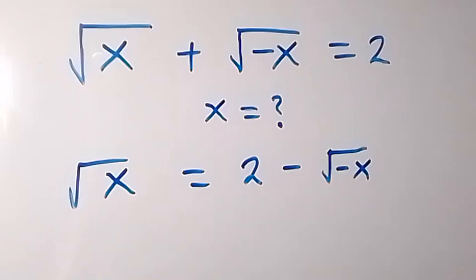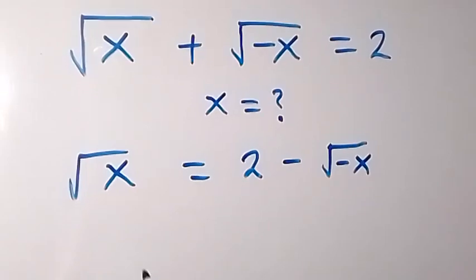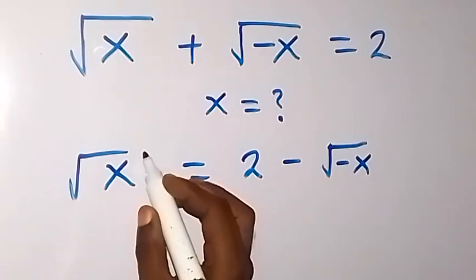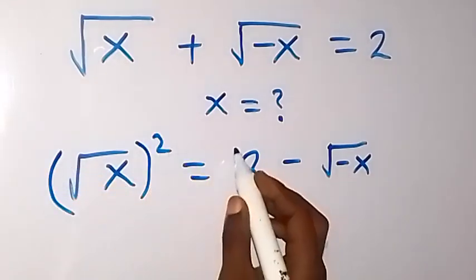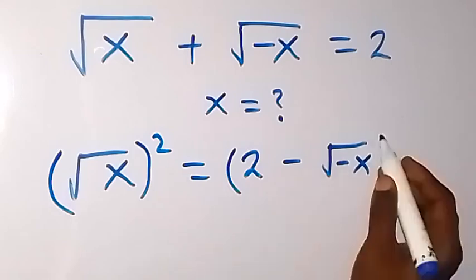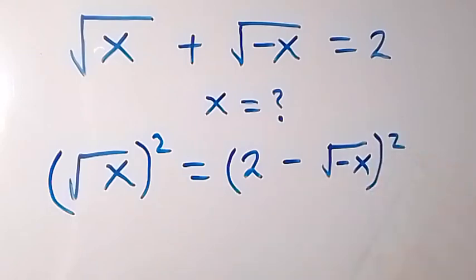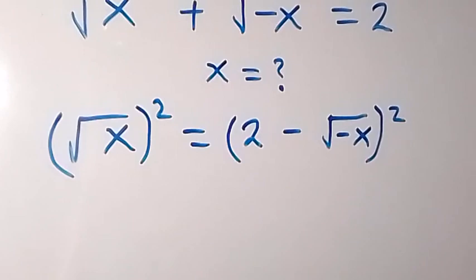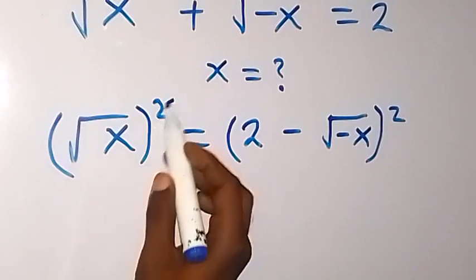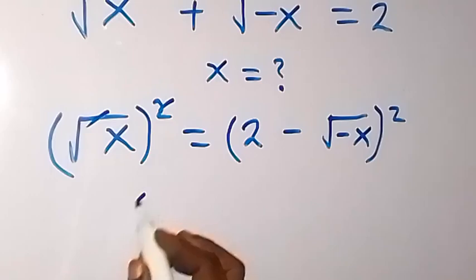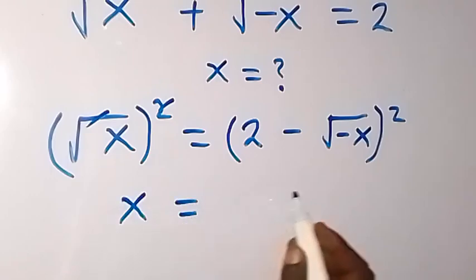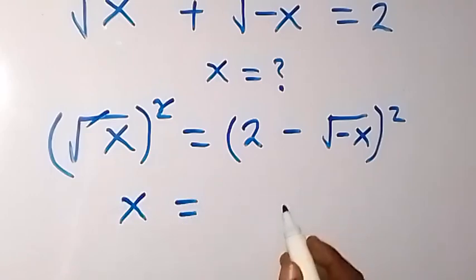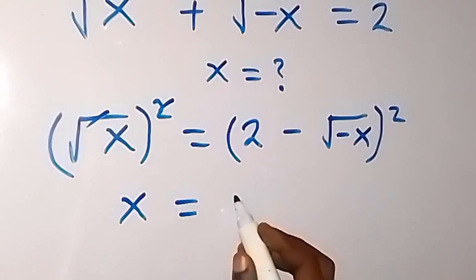Then in the next step, we can take the square on both sides. So we square this side, and also we square this side. The square on this side cancels the square root, and we are left with x, which will be equal to the expanded right side.